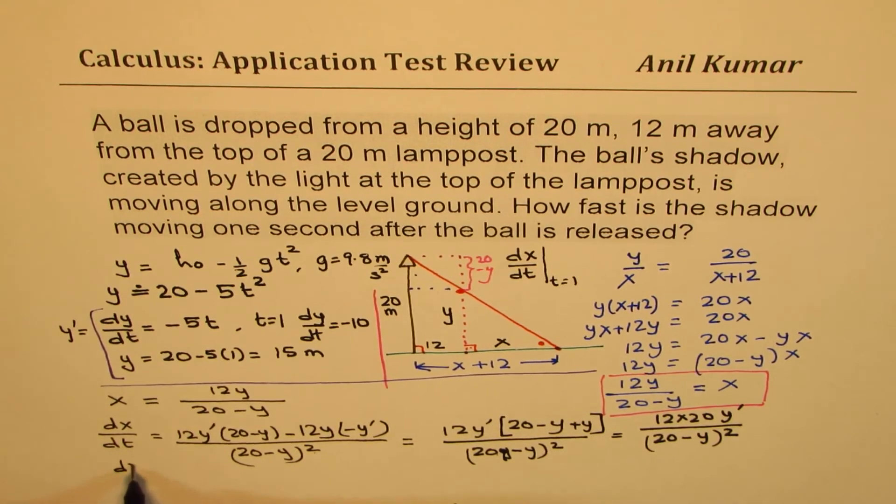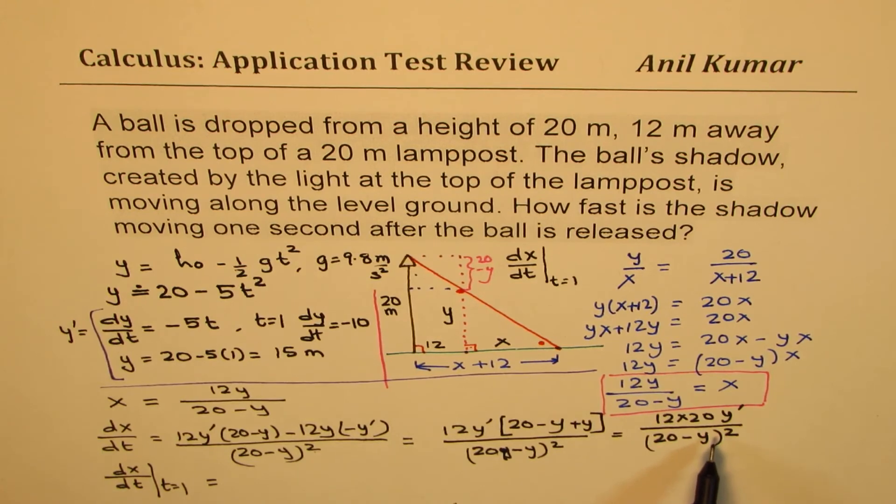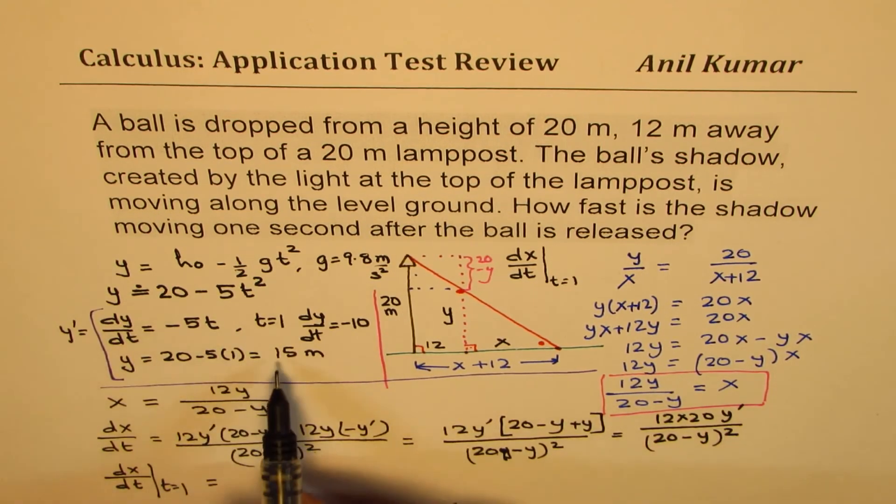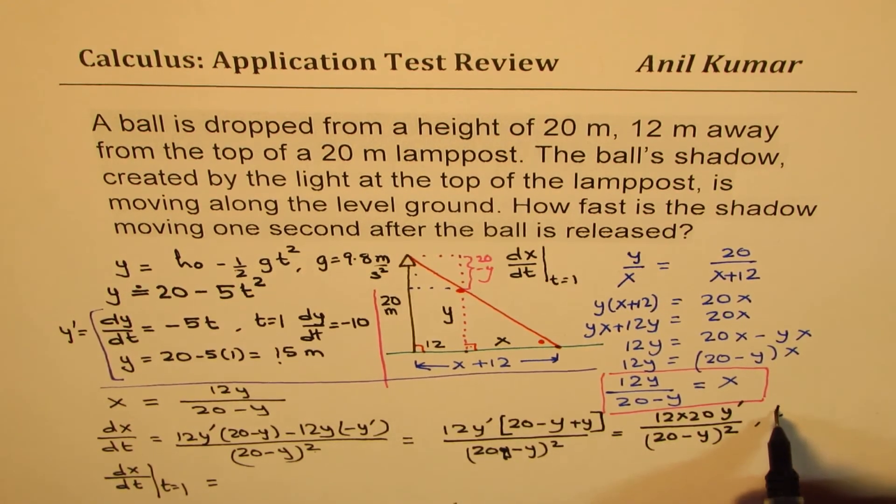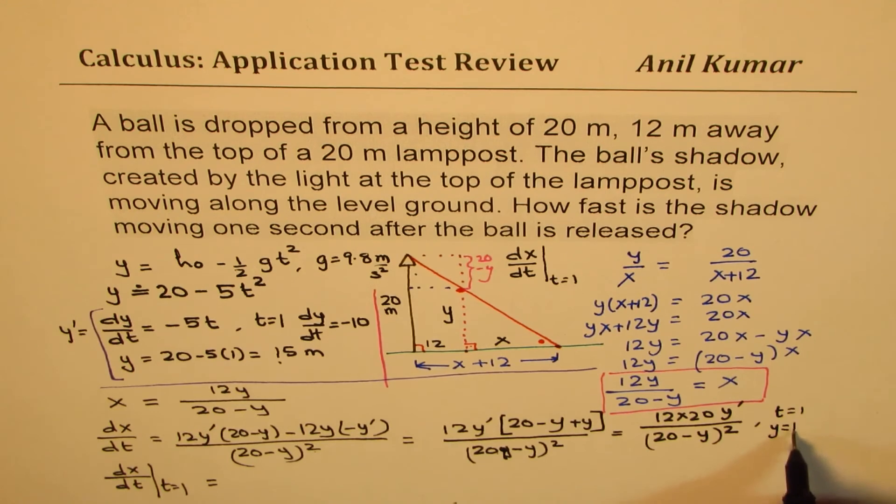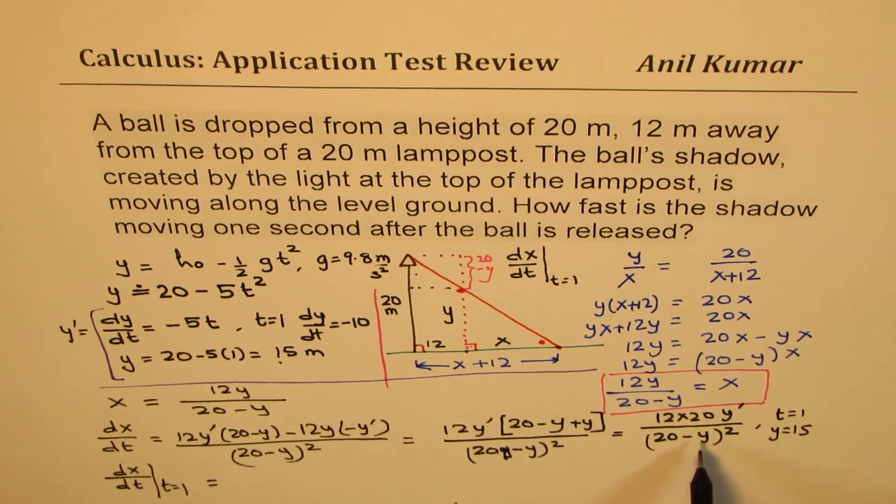Now what do you need to find? You need to find dx/dt rate of change of shadow length when t equals to 1. So if I substitute, at that time y equals 15. So I'll substitute 15 here. So at t equals to 1, y equals 15. If I substitute that, I get my answer.